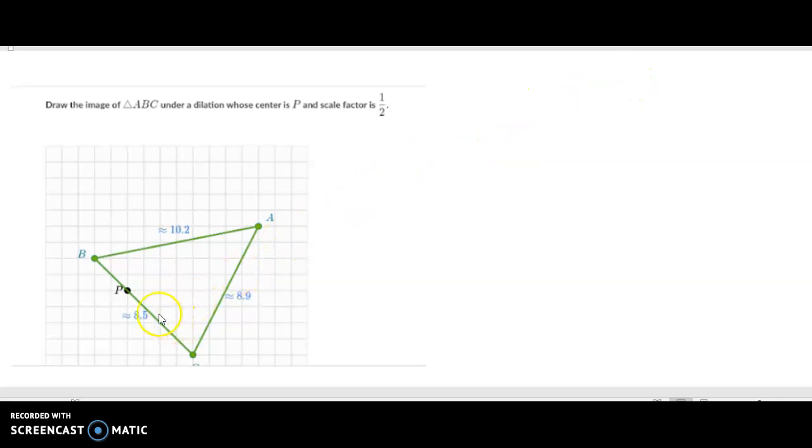When we take triangle ABC and we dilate it by a scale factor of one half, we're going to have a triangle that has sides that are one half the length of this current triangle. And we have to move every point closer to the center of dilation, which is P, by half, by halfway. So A has to move halfway closer to P, B has to move halfway closer, and C has to move halfway closer.